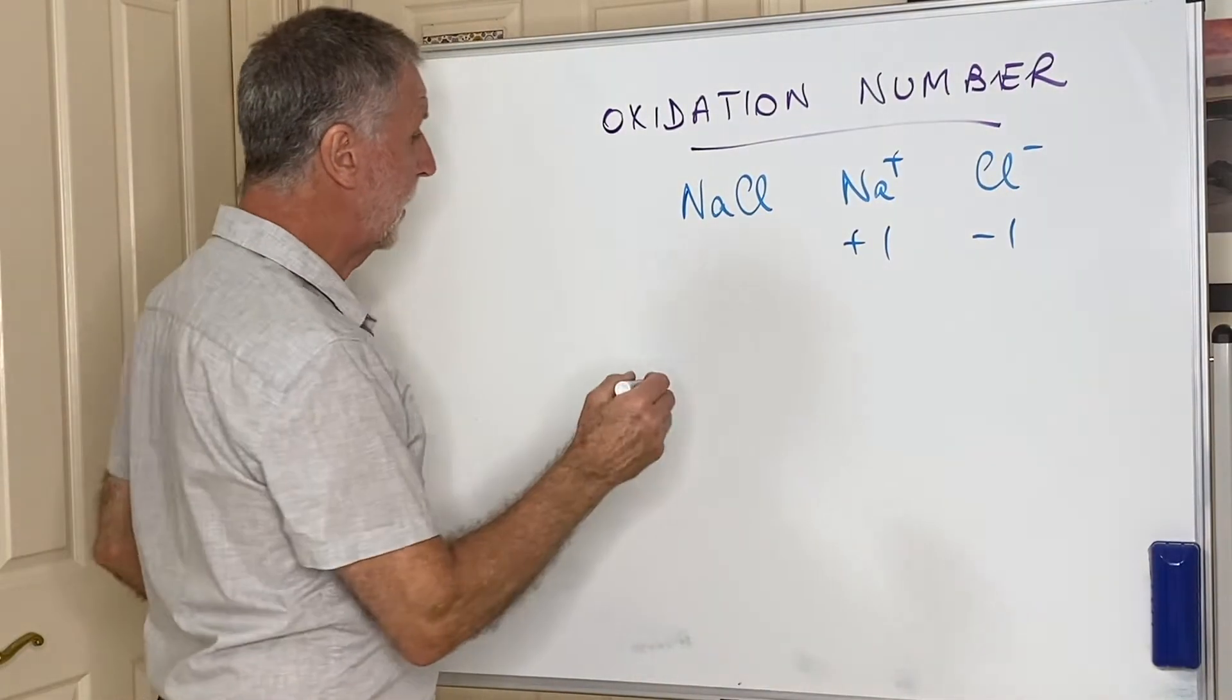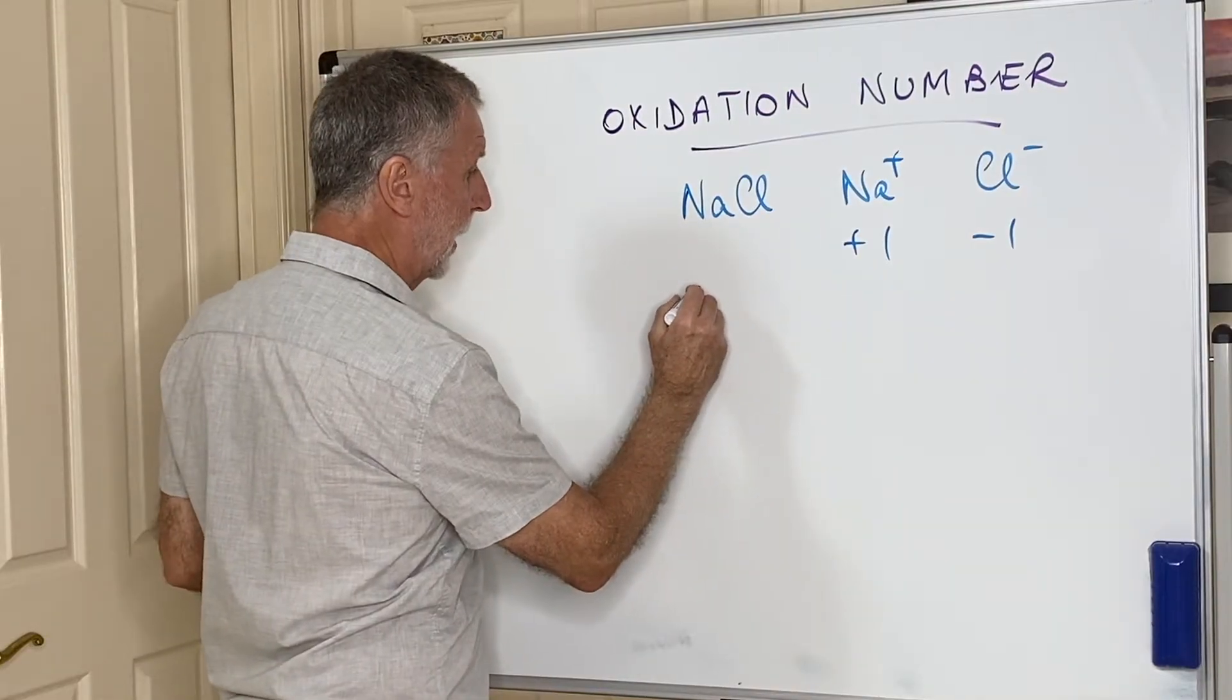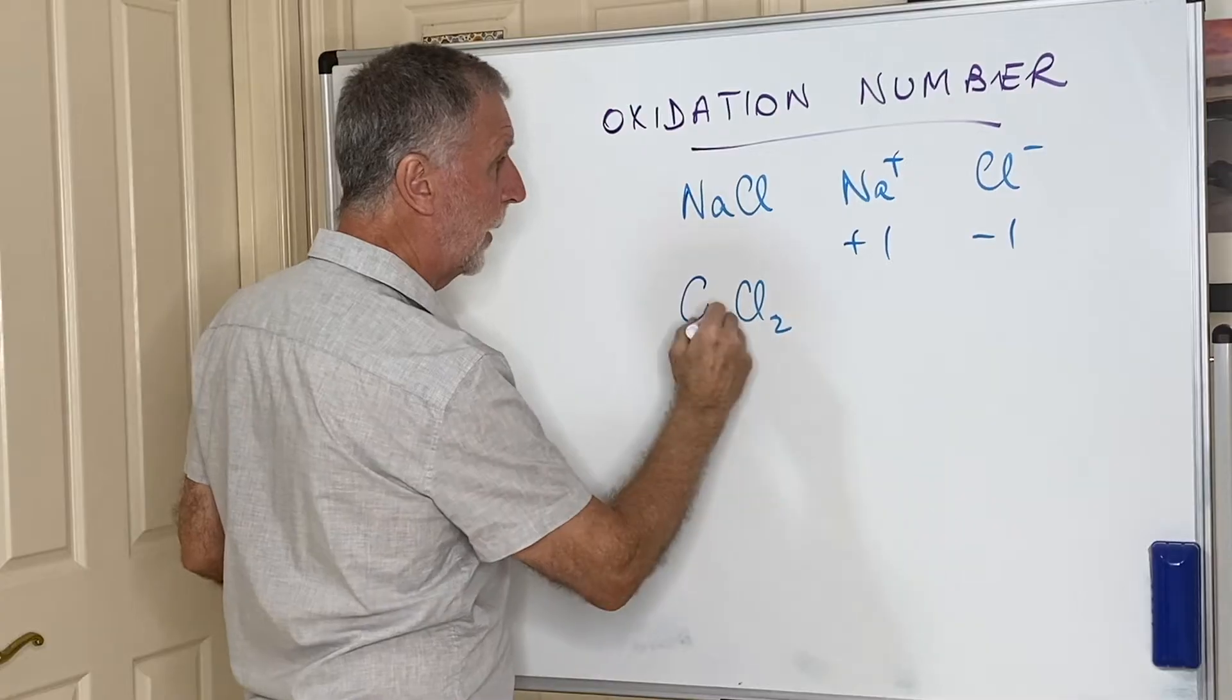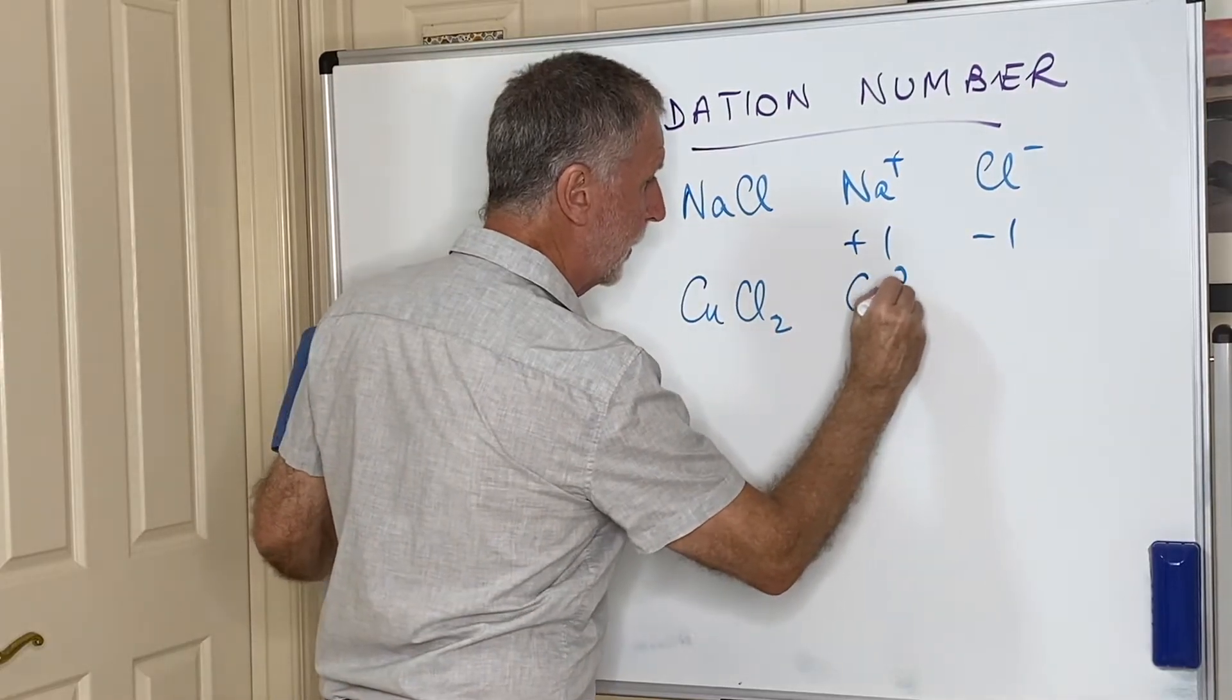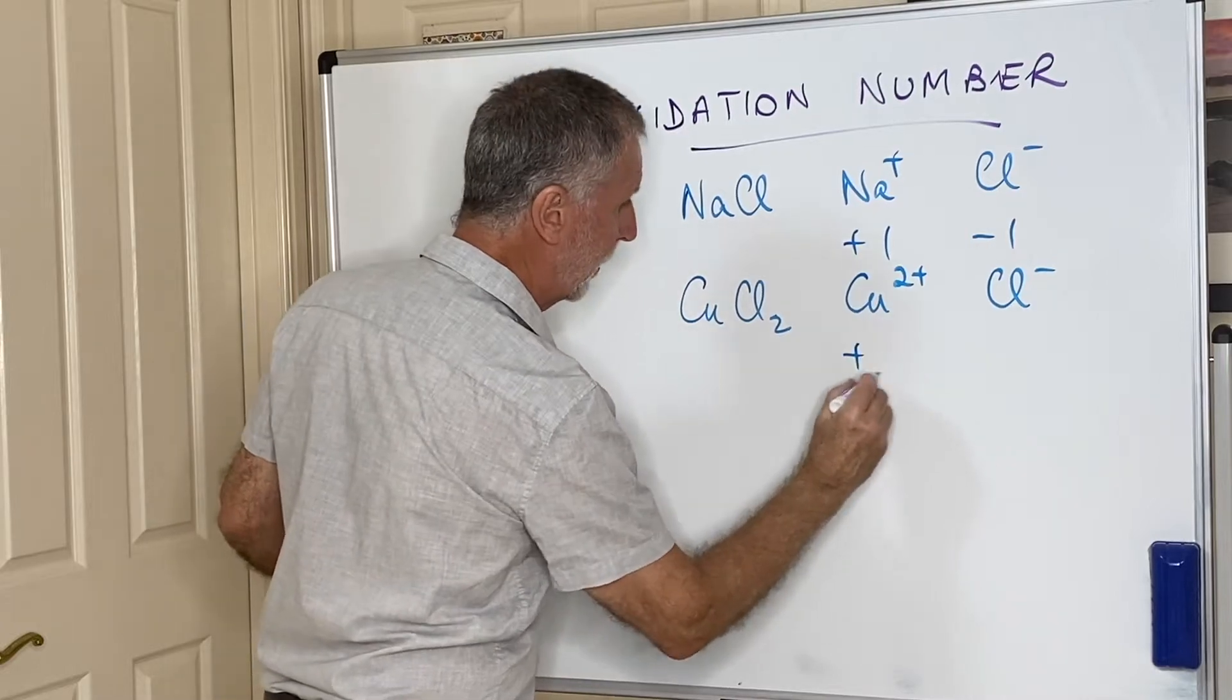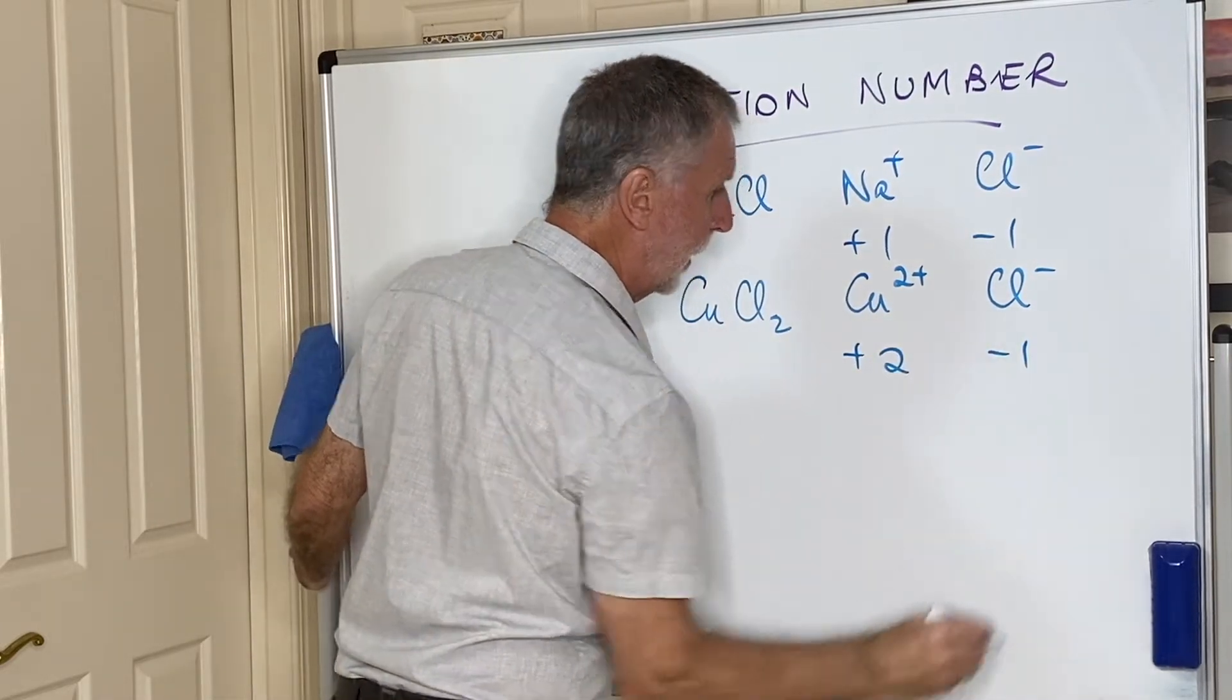If I had something like copper chloride, then the copper ion is a 2+ ion, the chloride will always be 1-, so therefore that's +2 and that's -1. So ionic compounds are easy.